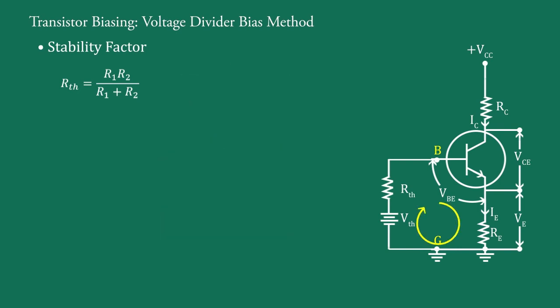Now, apply Kirchhoff's law to this base emitter loop. We get VTH equal to IBRTH plus VBE plus IERE. Here, IE equal to IB plus IC.